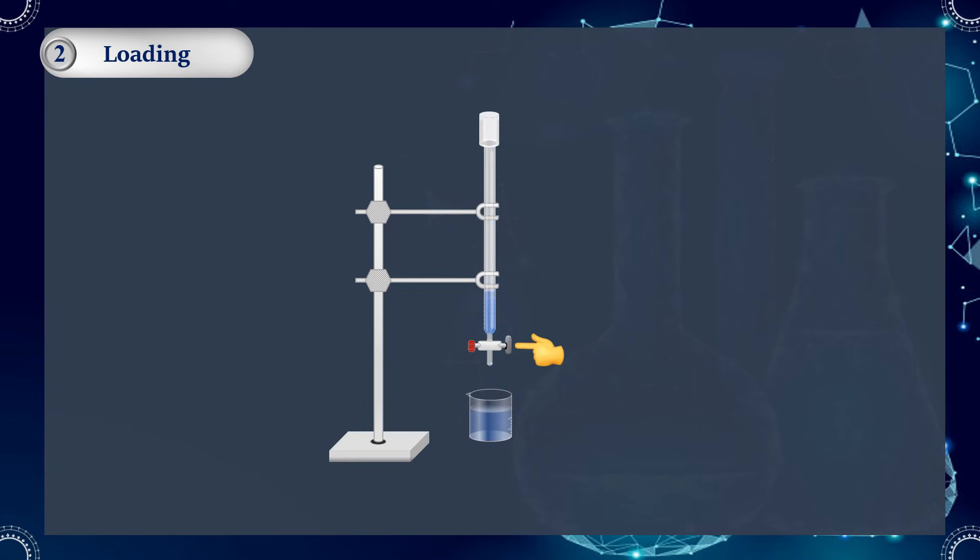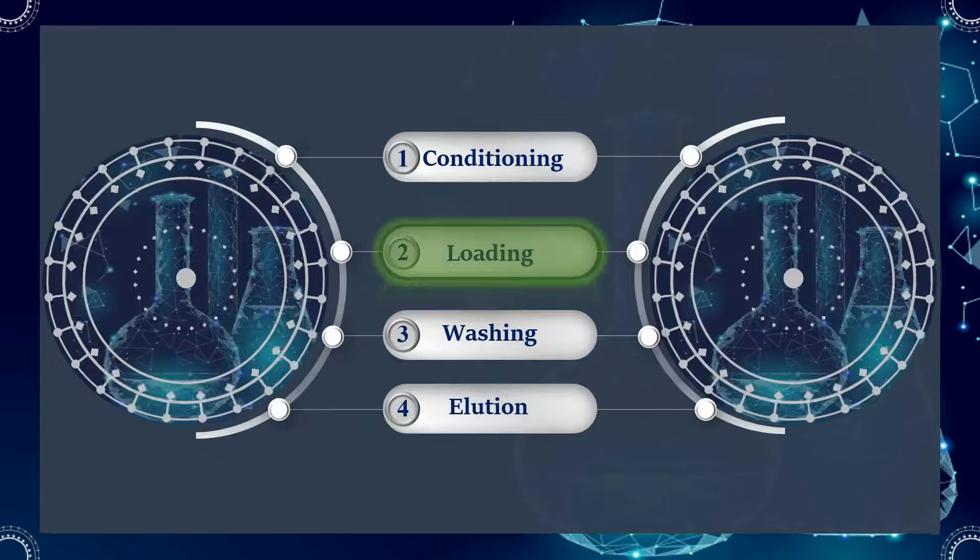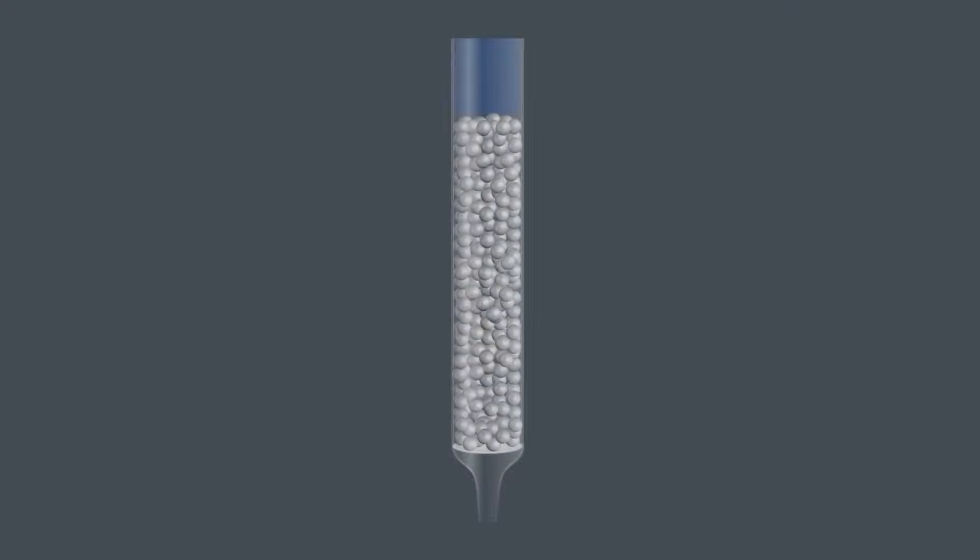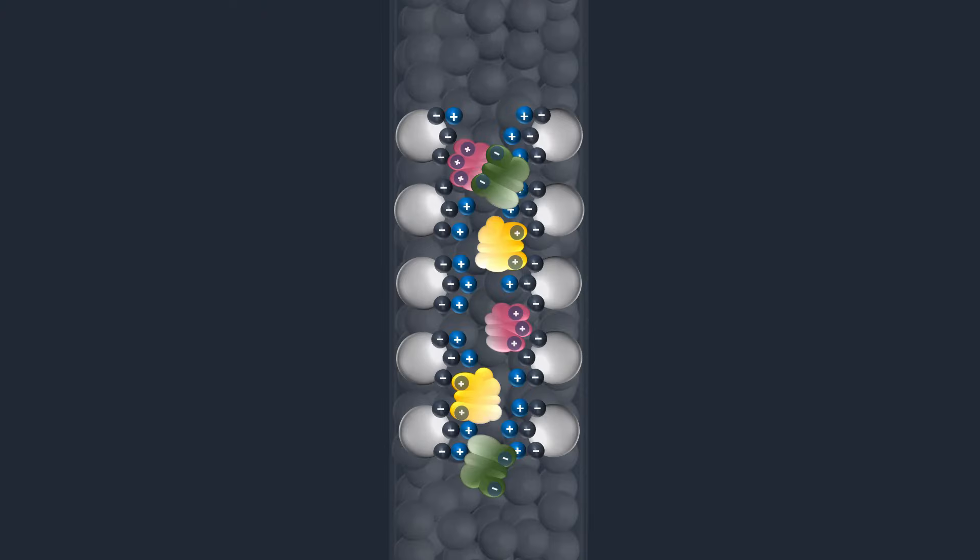When all the sample has been loaded, the next step is column washing. The column is washed with start buffer to ensure that all non-binding proteins have passed through the column.